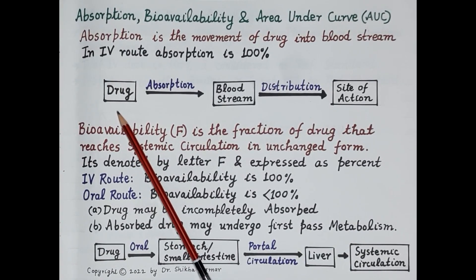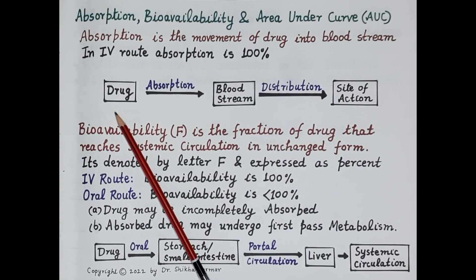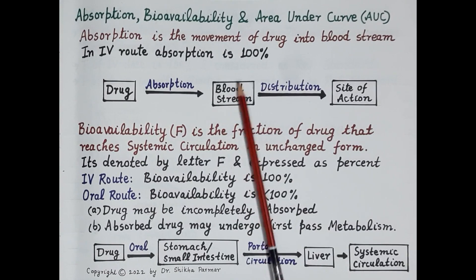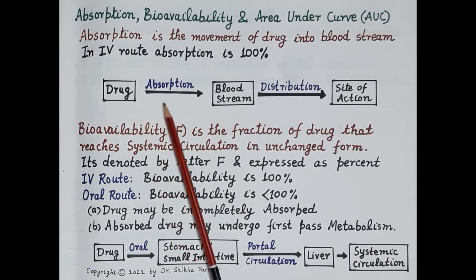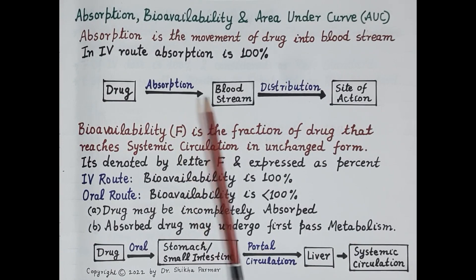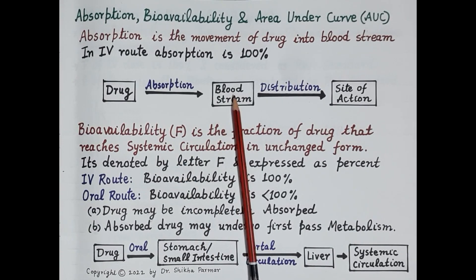Let's understand this with an example. Our drug is aspirin. Aspirin is administered orally and it reaches the stomach. Absorption of aspirin is the movement or transport of aspirin from the stomach fluid, across the wall of the stomach, into the blood. Very importantly, if a drug is given by the intravenous route — that is, injected directly into the blood — its absorption is 100 percent.